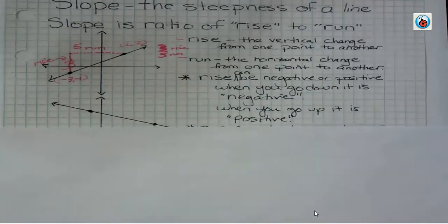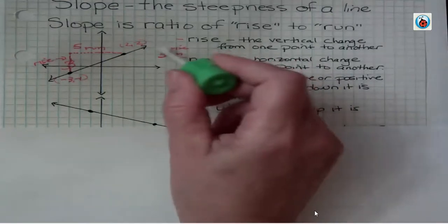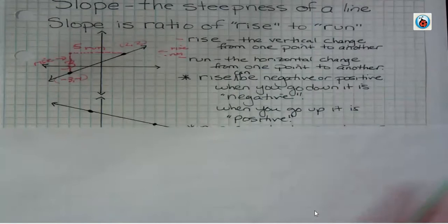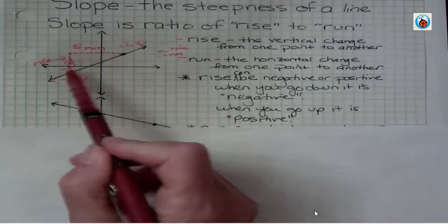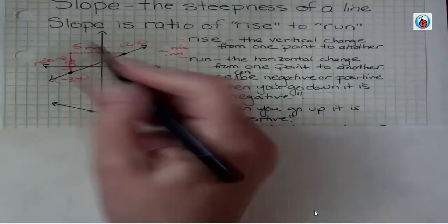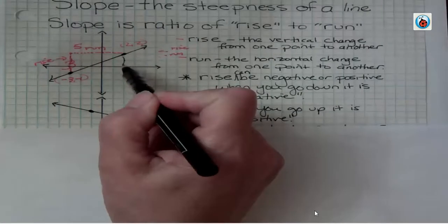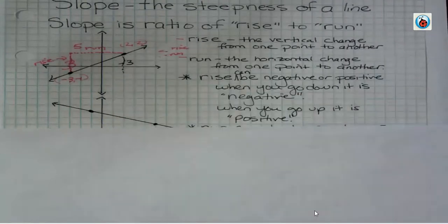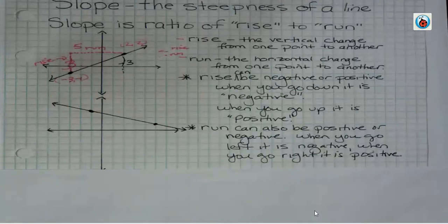What if we had looked at it from the other direction? Rise can be negative or positive: when you go down it's negative, and when you go up it's positive. Going from the left point we went up, so we had a positive rise of three. But from the right point, we'd go down three, so the rise would be negative three. The run can also be positive or negative: going left is negative, going right is positive. Going right we had positive five; going back to the left would be negative five.